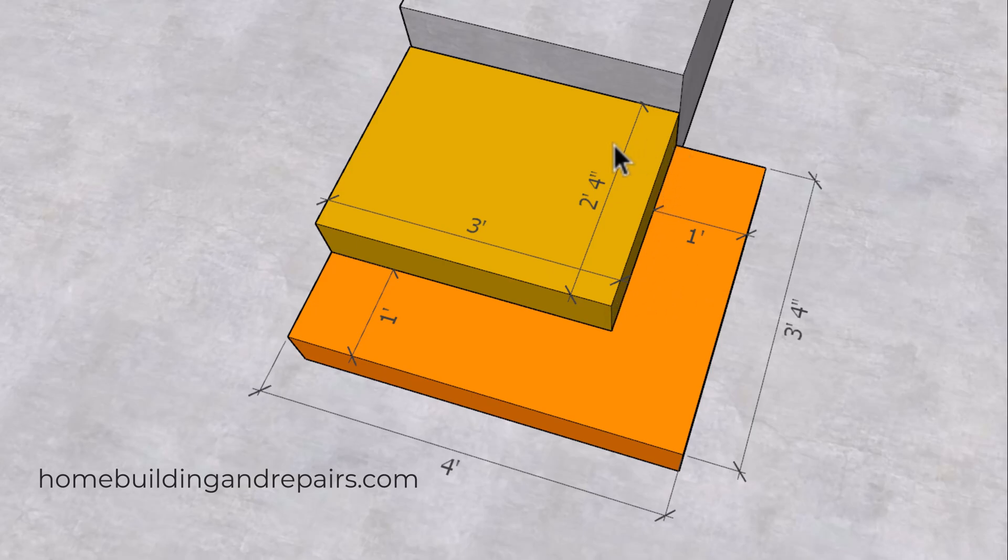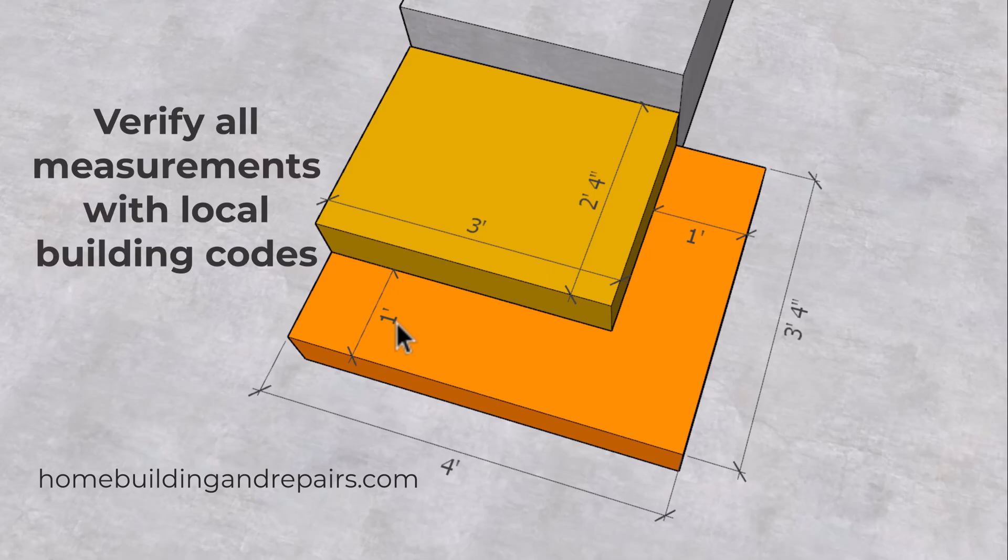Now to fix this, all we need to do is make this three foot and then extend this out so that we have our one foot tread depth going all the way around. Now I'm using one foot but you would need to check with your local building codes to see if this can be smaller. In a lot of cases for residential stairway construction the minimum here is going to be 10 inches.